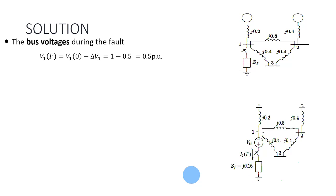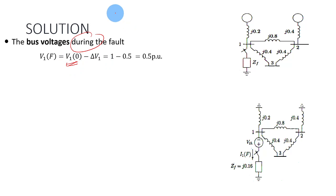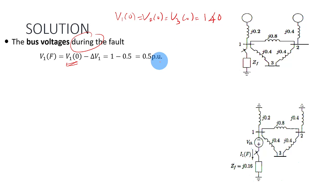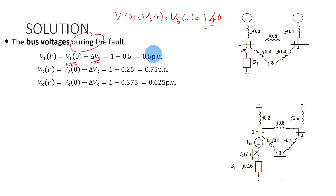You want to find what is the bus voltage during the fault. During the fault, the bus voltage equals the bus voltage before the fault (pre-fault) minus the change of voltage at that particular bus. The pre-fault voltage is always V1, V2, and V3 all equal to 1 at angle of 0 — always assume 1 per unit unless given a different value. So delta V1: 1 minus 0.5 equals 0.5, and the same for the rest of the buses.